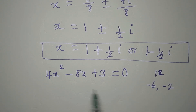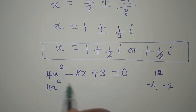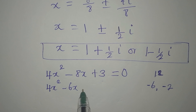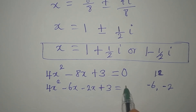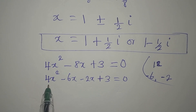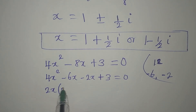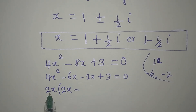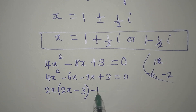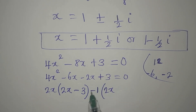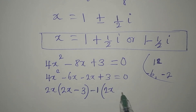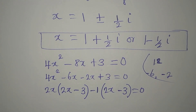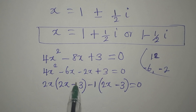So we write 4x squared minus 6x minus 2x plus 3 equals 0. Grouping the first two: 2x is a common factor, giving 2x(2x minus 3). For the last two, we take minus 1 as a factor: minus 1(2x minus 3). Since both brackets are the same, we factorize: (2x minus 3)(2x minus 1) equals 0.